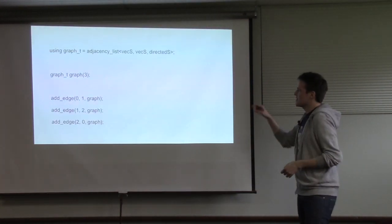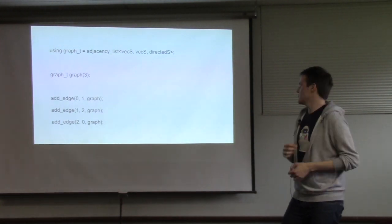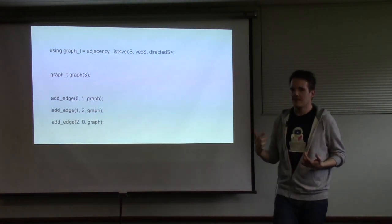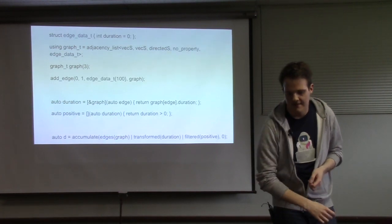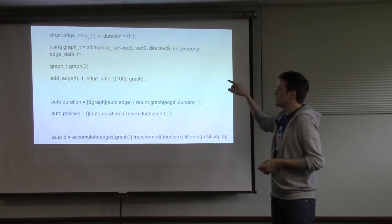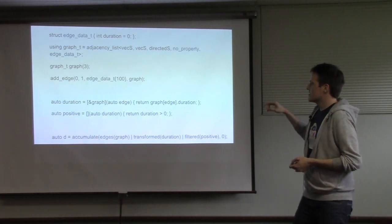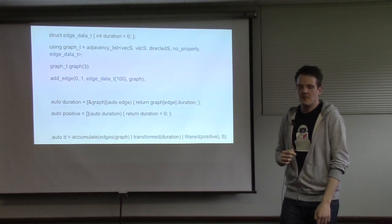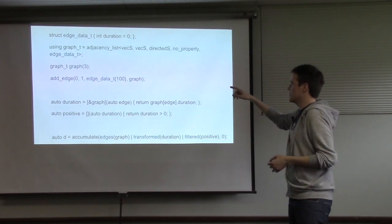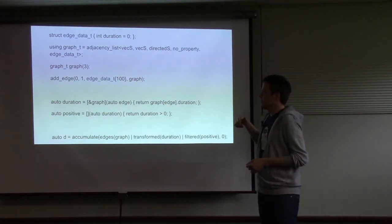Here's how you use it: in this case we're using a vector as both outer and inner container — we don't care about iterator invalidation. We instantiate a graph, add some edges, and that's it. Now we want to add metadata to our graph — in this case, a duration to every edge. We specify our edge data struct as a template parameter, and for vertex data we use no_property. Then we instantiate the graph, add edges, and also add the edge data.